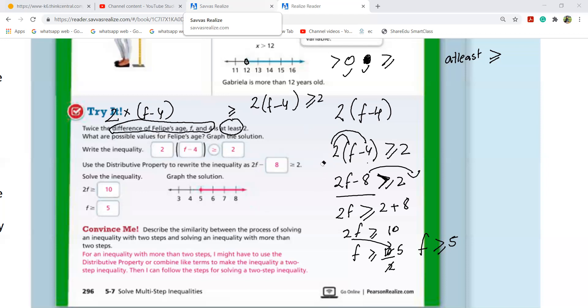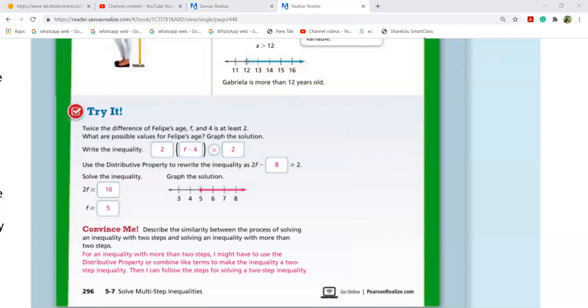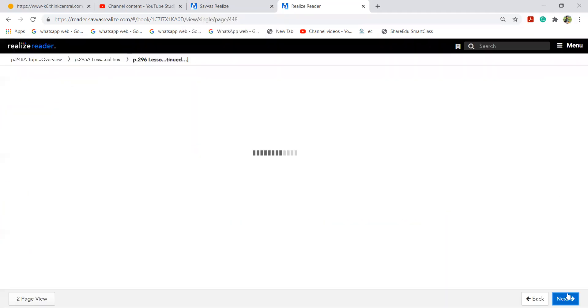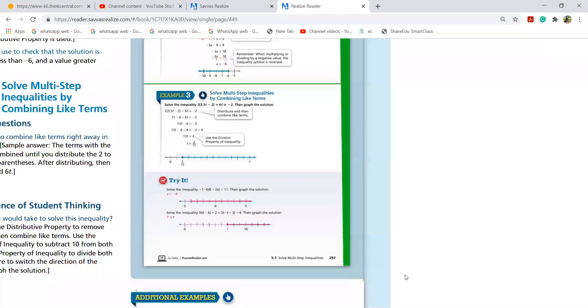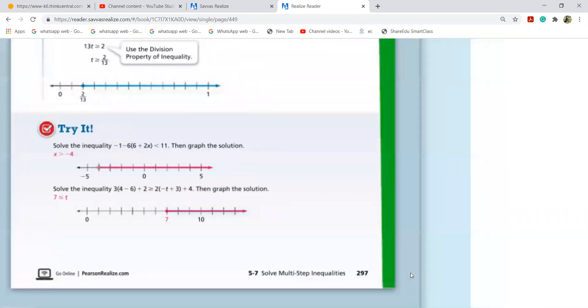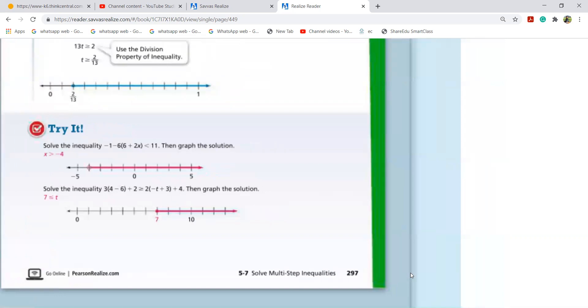Yes. Yes. Coming to page 297. Ah, you have a longer question now. Minus one. Minus six. Six plus two X. You have bigger values here now. It's less than 11. Okay. Now, let's solve this.